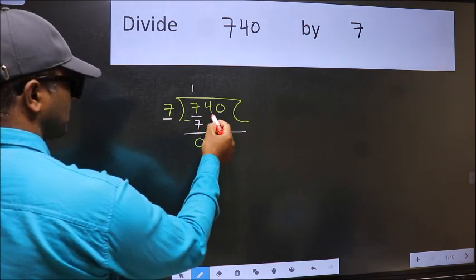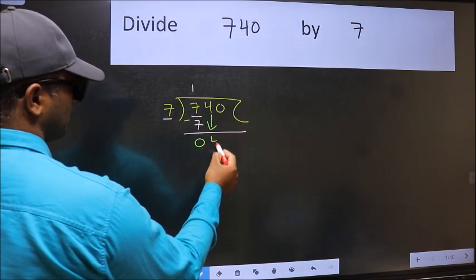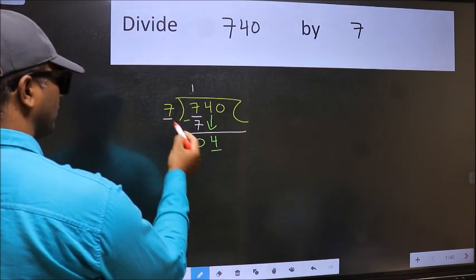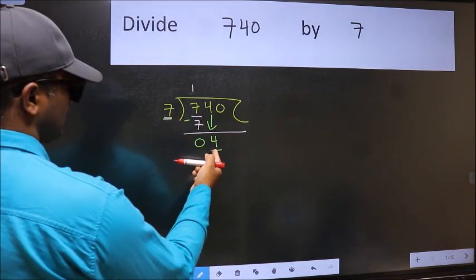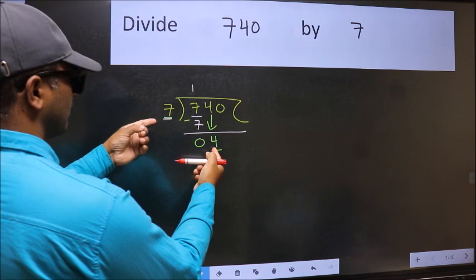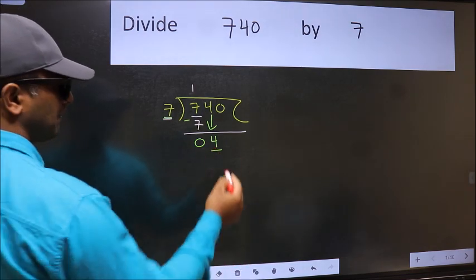After this, bring down the beside number. So 4 comes down. Now we have 4 here and 7 here. 4 is smaller than 7, so we should bring down the second number.